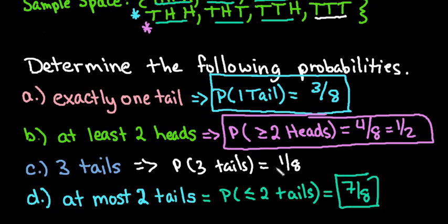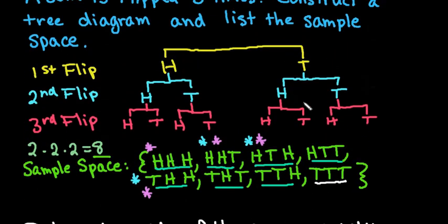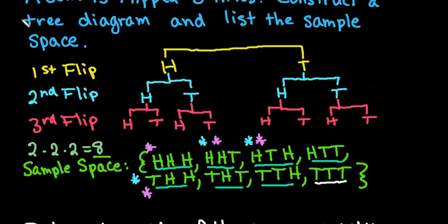To recap, a tree diagram is useful for a small sample space. It would not be helpful if you were flipping a coin 20 times. But for a small sample space it helps you see exactly what is happening and then helps you find probabilities. Thanks for watching — if you have any questions please let me know.